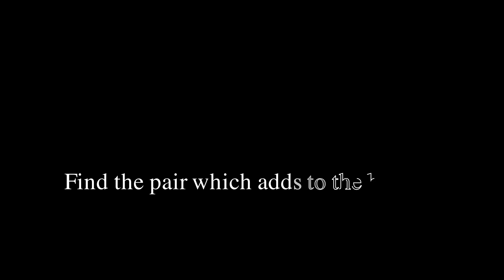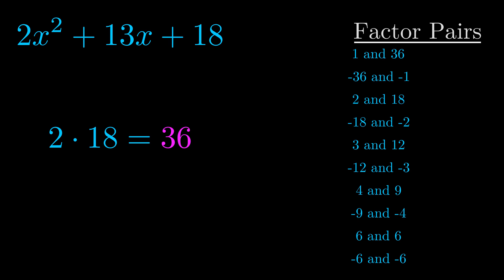The b value is the coefficient on the x term. That's the middle term, the one that we haven't done anything with yet. And really this is the only factor pair that we need.